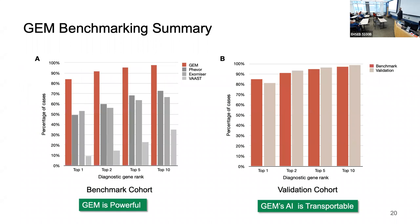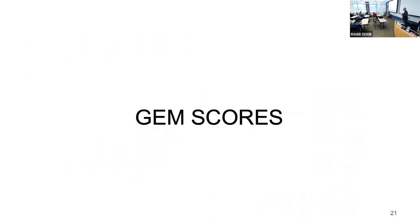Looking at the primary benchmark figures: we measured how often tools ranked the diagnostic hit as the top candidate, within the top 2, 5, and 10. The quick takeaway is that GEM is substantially more powerful than other tools. Critically, GEM's performance across the validation dataset is essentially unchanged from the benchmark dataset — demonstrating no overfitting to local data.